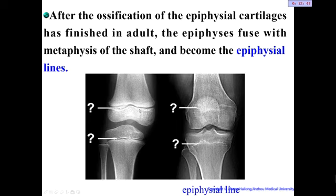If boys and girls want to know whether they can still grow taller, they can go to the hospital for an X-ray. If there is still a cartilage space, congratulations — you can still become taller. If it is only a white line, the epiphyseal cartilage has ossified and you cannot grow taller anymore.